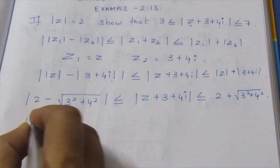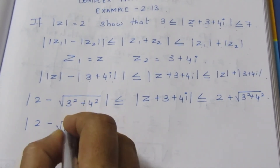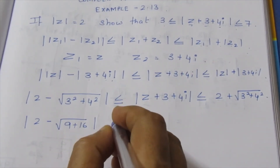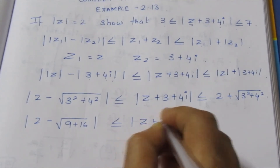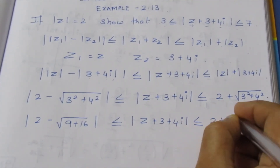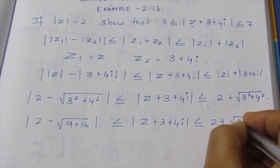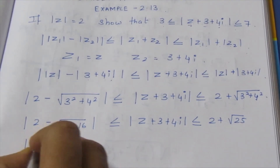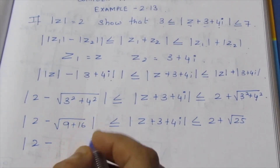Modulus 2 minus root of 3 squared — that is 9 plus 16 — so modulus less than or equal to Z plus 3 plus 4i less than or equal to 2 plus root of 9 plus 16, which equals 25. Root 25 is 5.